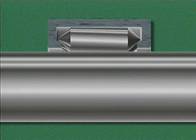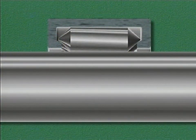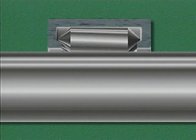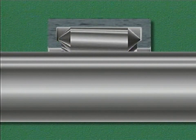Needle roller bearings are often mounted without an inner ring or a retainer. Instead, the rollers ride directly on the surface of the shaft. Because these bearings can be mounted without an inner ring, they are often mounted on shafts where space is limited.